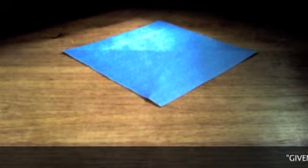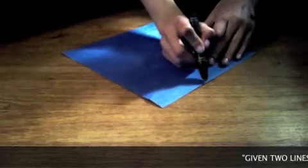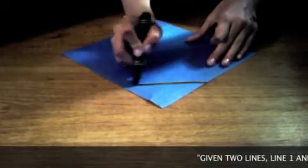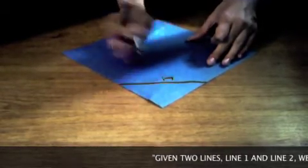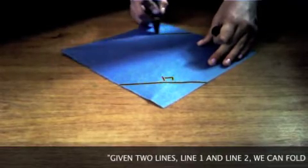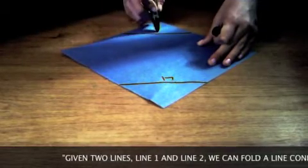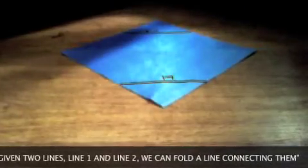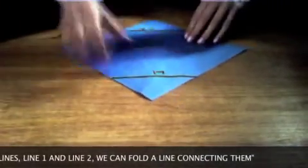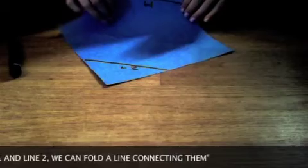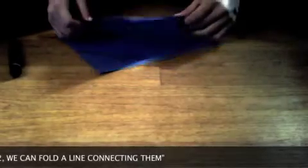The third axiom states that if you are given two lines, line one and line two, therefore then we can fold line one onto line two.